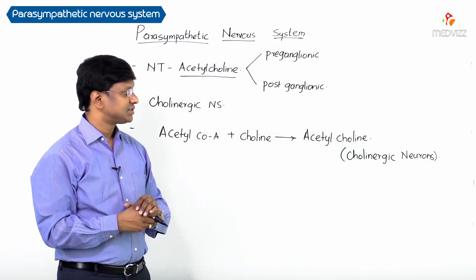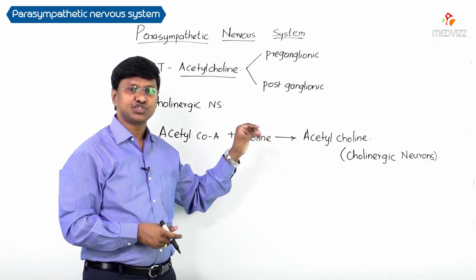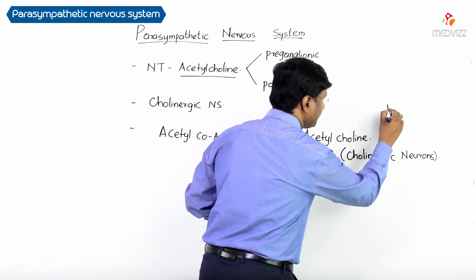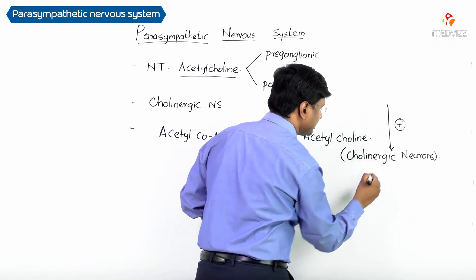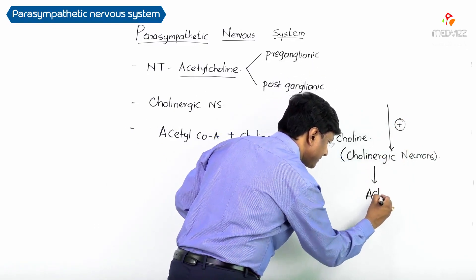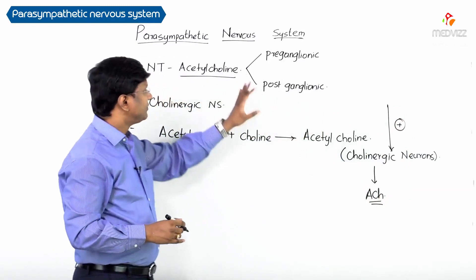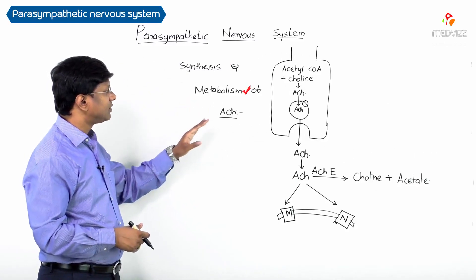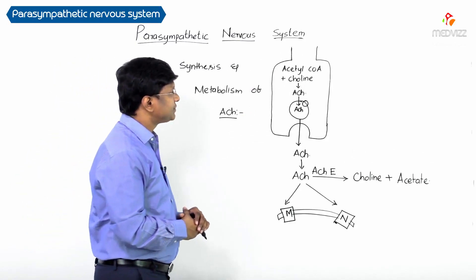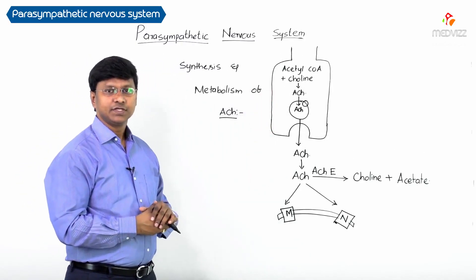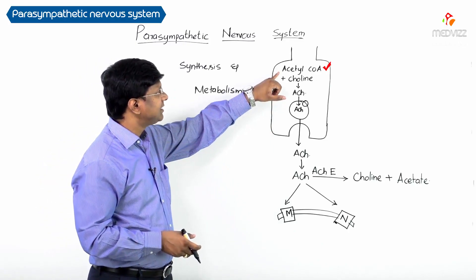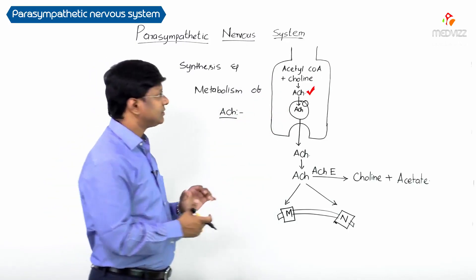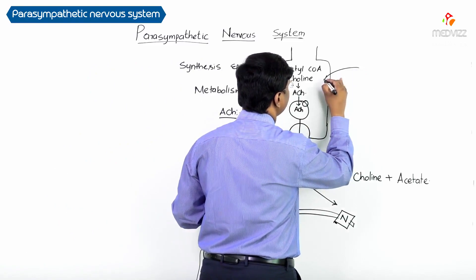Whenever the cholinergic neurons are stimulated, acetylcholine is released from them. Looking at the diagram, within the cholinergic neuron, acetyl plus choline combine to form acetylcholine, and the choline is taken up from outside.